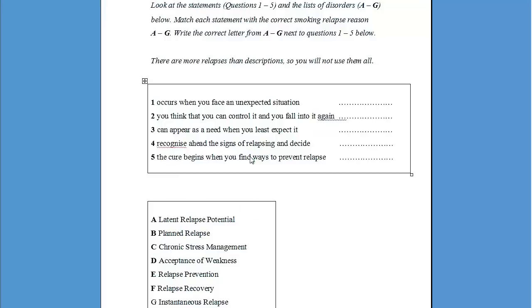So the statements are going to be paraphrased, so try to locate their meanings in the text and not the exact same words. Another thing you can do that will help is to scan where exactly in the text each name or idea from A to G appears, and read this information carefully and then decide which of the statements match this information in the text.